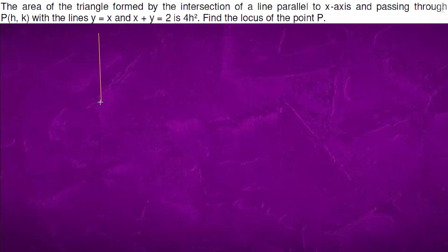So what will we do? We will first draw a coordinate axis. The area of the triangle formed by the intersection of a line parallel to x-axis, passing through h, k at this point.